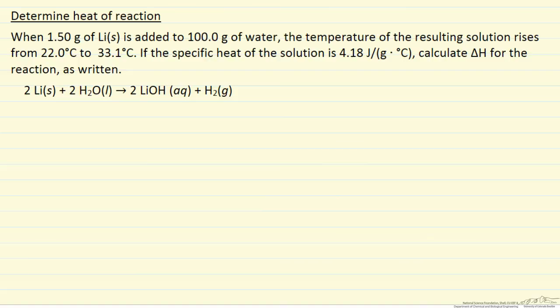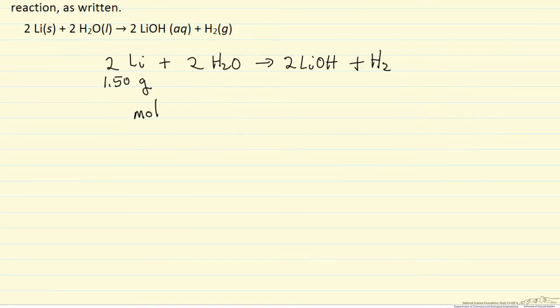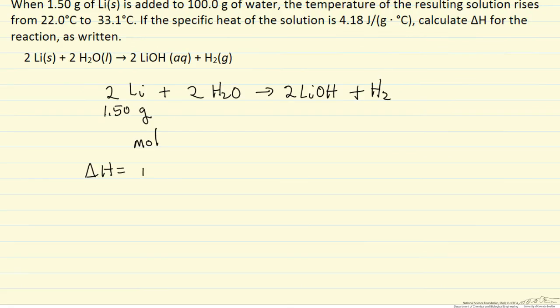So let's first write down what we know. What we want to calculate first is the number of moles of lithium that are reacting and then we can calculate the delta H for the process. Delta H would be the mass times the heat capacity times the temperature difference.